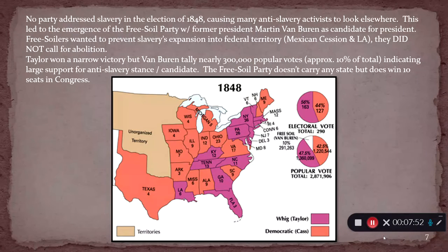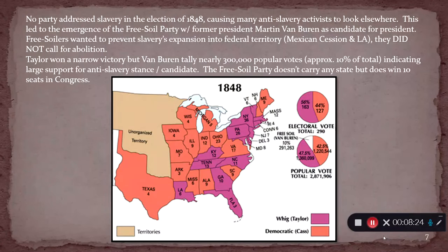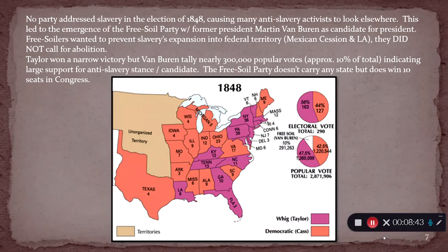In the election of 1848, the Free Soil Party — looking at the pie graphs on the right — Van Buren manages to win about 10 percent of the total popular vote, which is a big chunk. Because of the nature of the electoral college, he doesn't pull down any electoral votes, but he wins a lot of votes indicating that many people are voting almost entirely on the matter of slavery. The Free Soil Party also manages to get 10 seats in Congress.